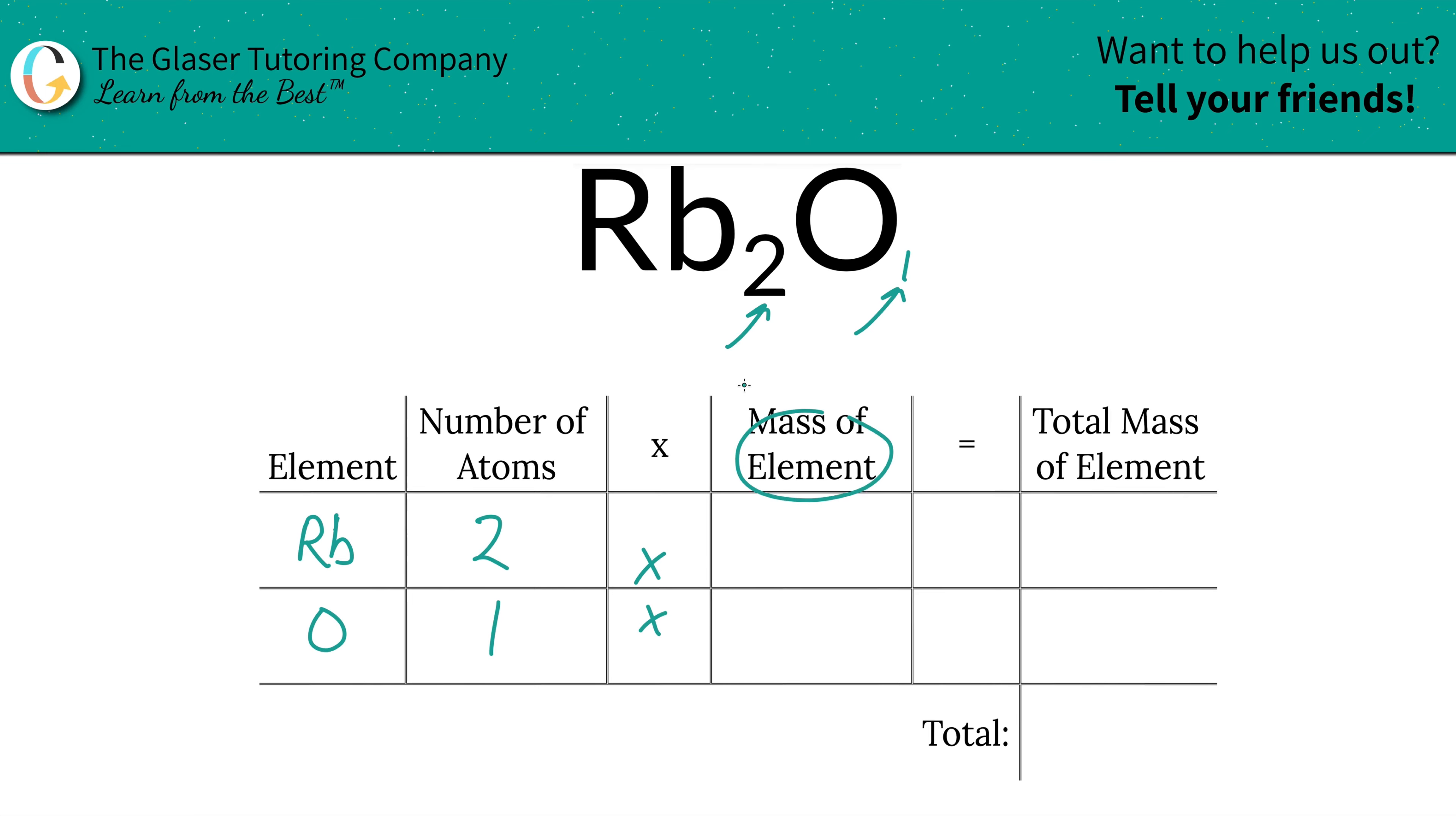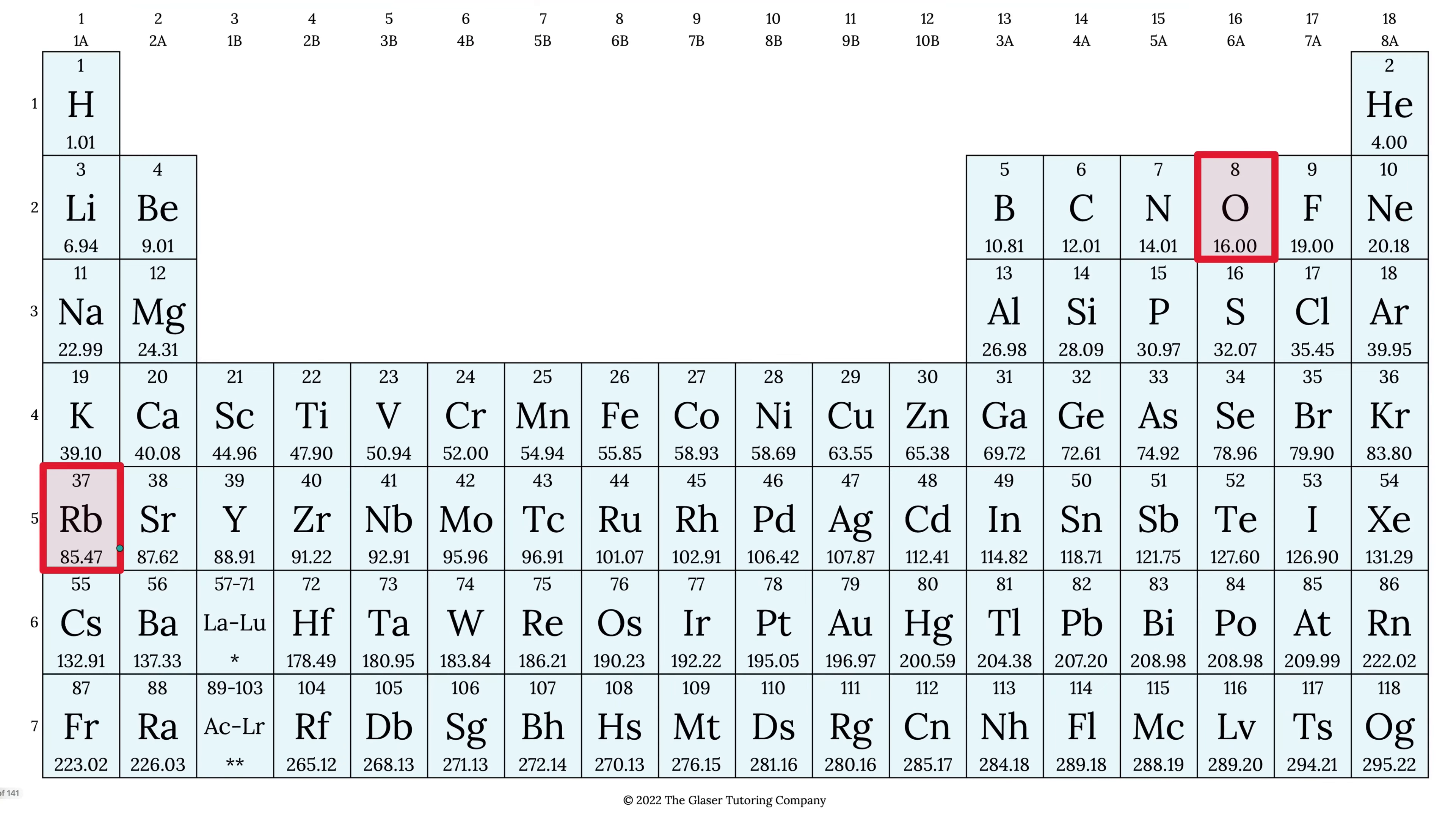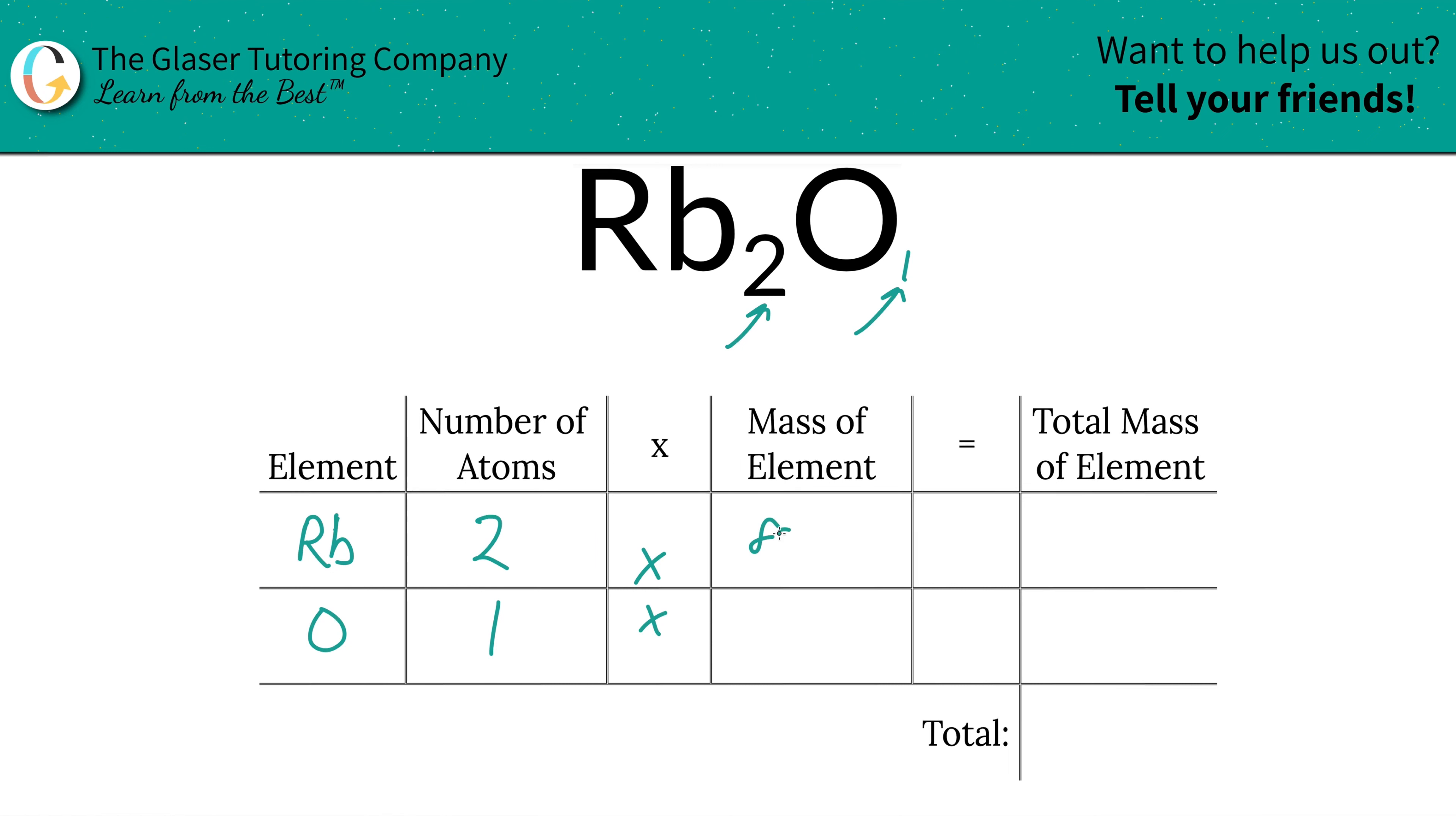Then we're going to multiply those number of atoms by the mass of each element. Those masses are found on the periodic table, so the mass of rubidium is 85.47. Oxygen is 16. That's what we're going to write in.